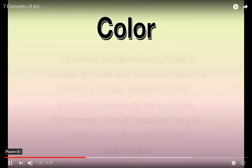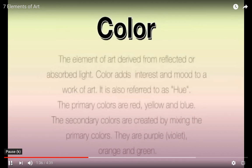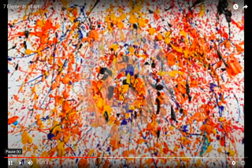Color. The element of art derived from reflected or absorbed light. Color adds interest and mood to a work of art. It is also referred to as hue. The primary colors are red, yellow, and blue. We can make every other color as long as we have red, yellow, and blue. The secondary colors are created by mixing the primary colors — purple, orange, and green. For example, red and yellow mixed together will create the secondary color orange. These are all vibrant colors.